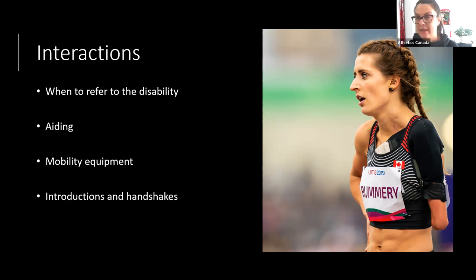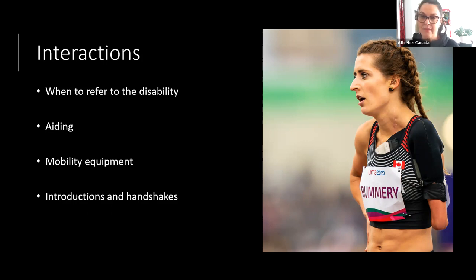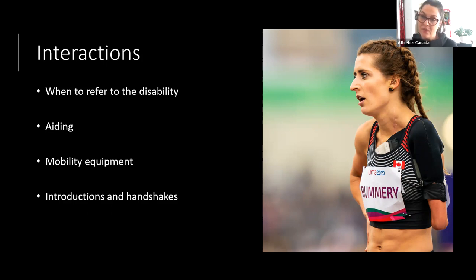Mobility equipment — wheelchairs, walkers, canes, crutches, artificial limbs — is part of a person's space and an extension of their body. It should be respected as such. Don't touch the day chair sitting on the side; don't sit on it or put something on it. Some athletes may have speech impediments or take longer to get a thought out, so be patient and wait for a person to finish rather than trying to correct them or finish their sentence. If you don't understand, don't pretend you do — ask them to repeat, or ask direct yes/no questions.